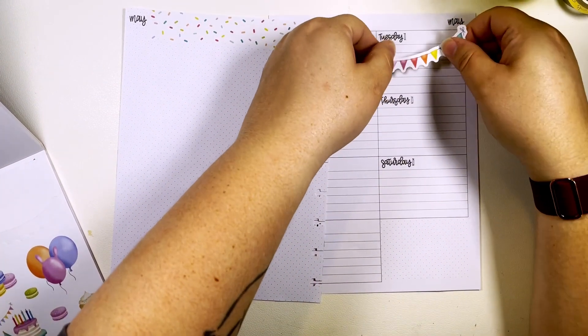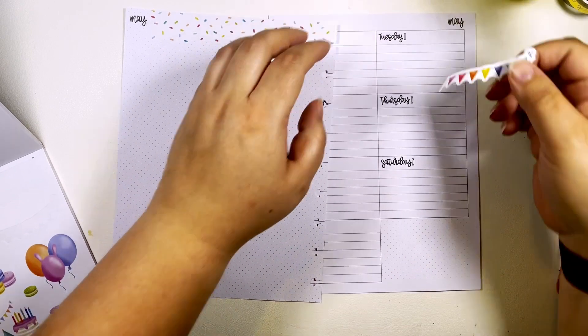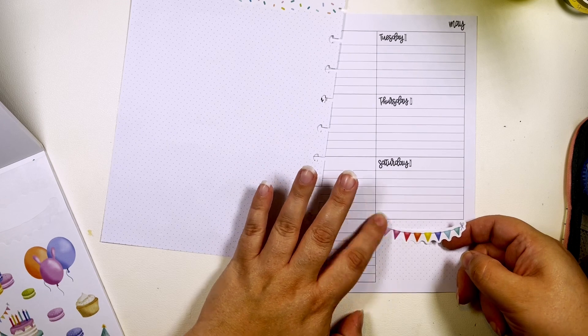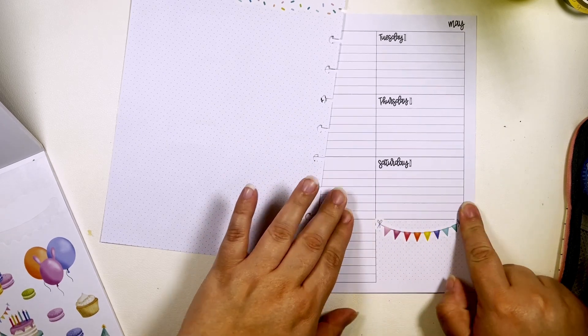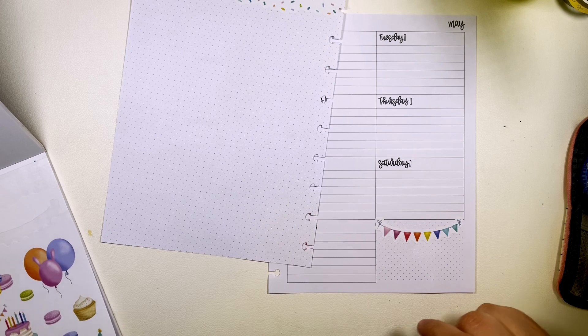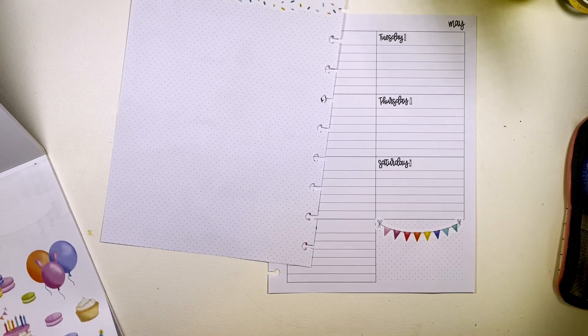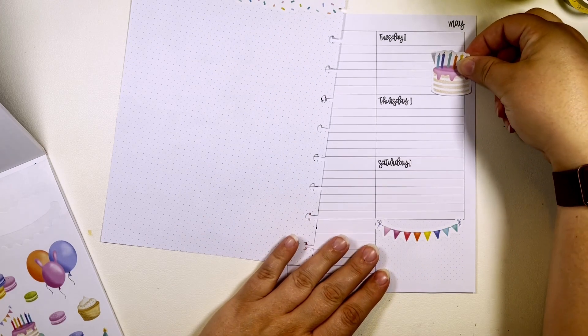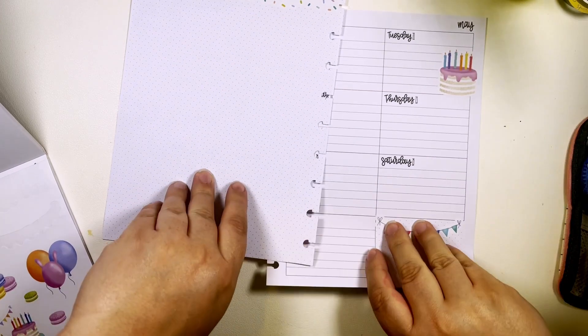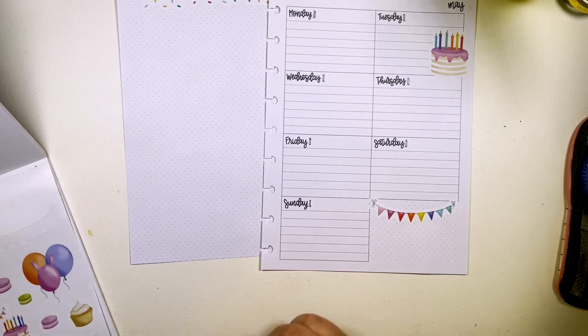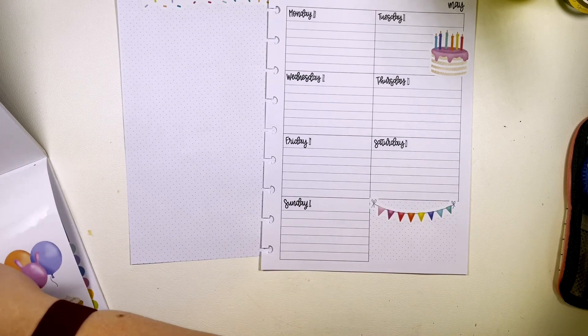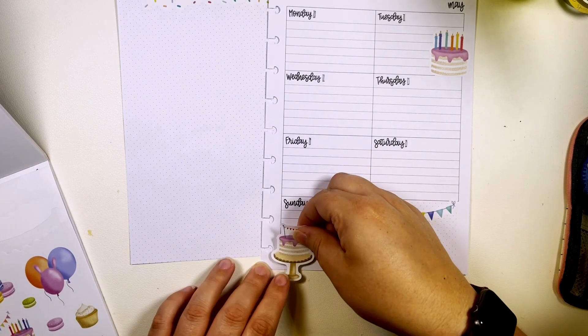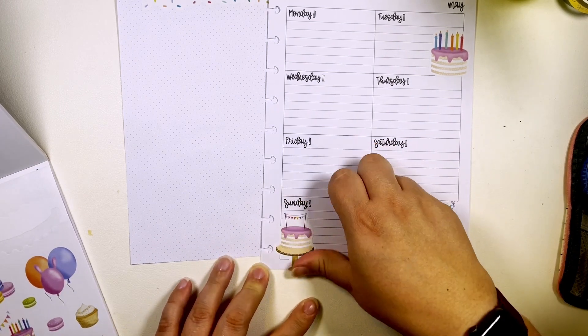We're gonna take this little banner down here actually, and then I'm gonna take this cake and put it on Tuesday. And then we'll take another little cake and put it on Sunday.